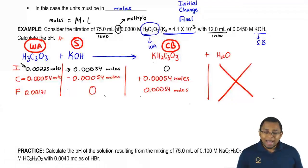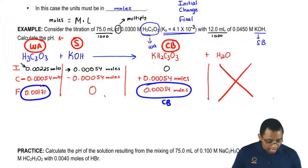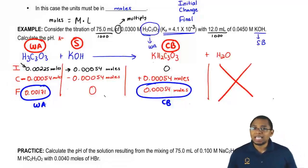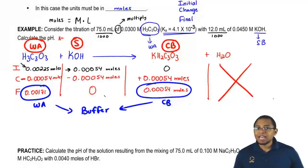What you need to realize here is, what do you have at the end? You have conjugate base left and you have weak acid left. Weak acid and conjugate base, what does that give us? That gives us a buffer. If you have a buffer, just use the Henderson-Hasselbalch equation to find pH.